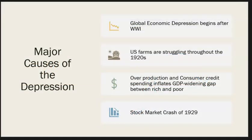The major causes of the Great Depression. The first indicator that the United States might fall into depression was the global economic depression that began after World War I. In the United States, farmers were struggling throughout the 1920s. There was an overproduction, not only in the farm sector, but also in industrialization. We then tried to buy up some of this excess product through consumer credit spending, which inflated the GDP. At the same time, there was a widening gap between the rich and the poor. The final death knell to the boom of the 1920s was the stock market crash of 1929.